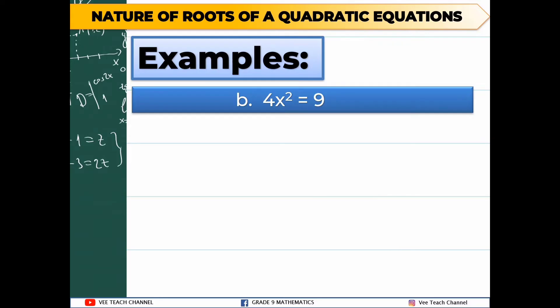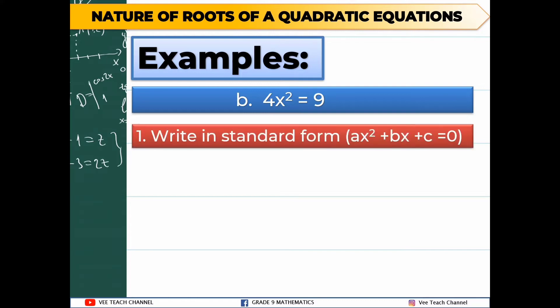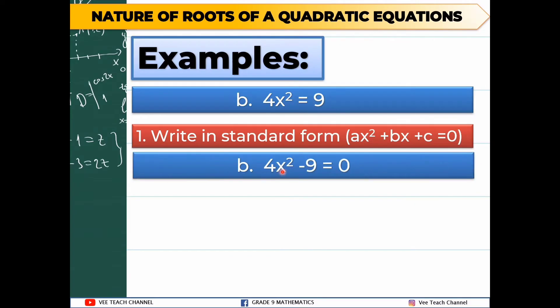Let's have our second example: 4x squared is equal to 9. The first step is to find the discriminant, and to do that we need to write the equation in standard form. This is not yet in standard form, so we must make it equal to 0 by subtracting 9 from both sides. It becomes 4x squared minus 9 is equal to 0.